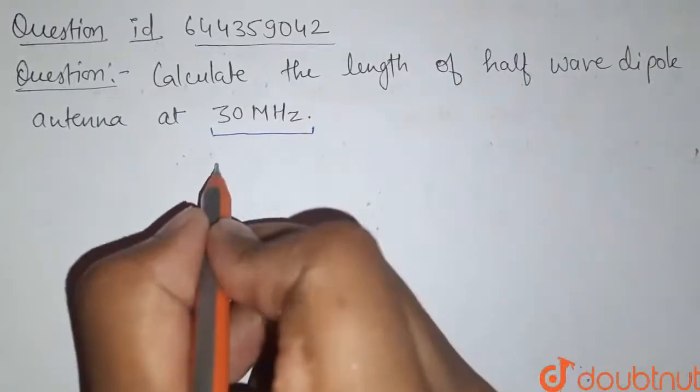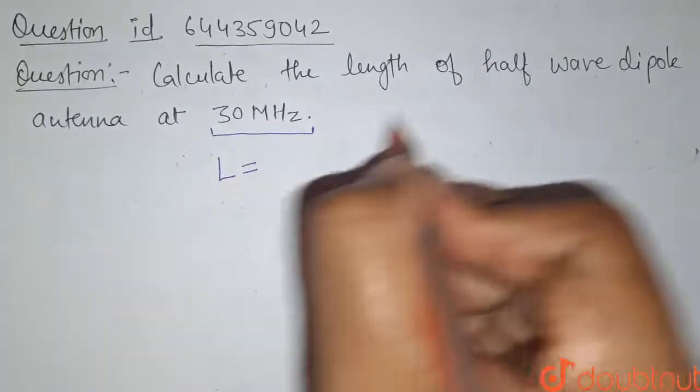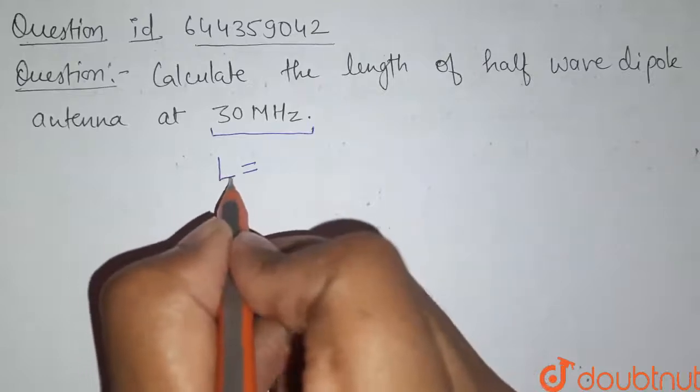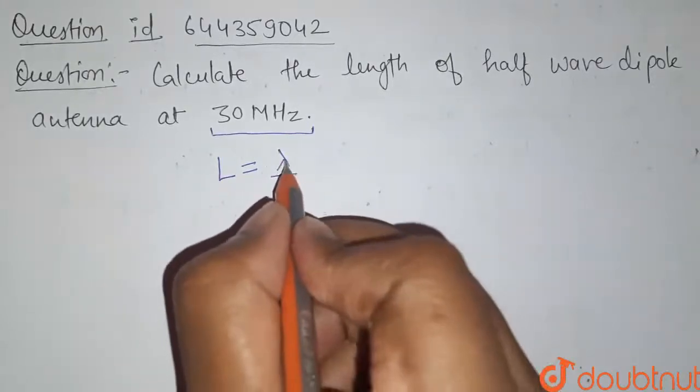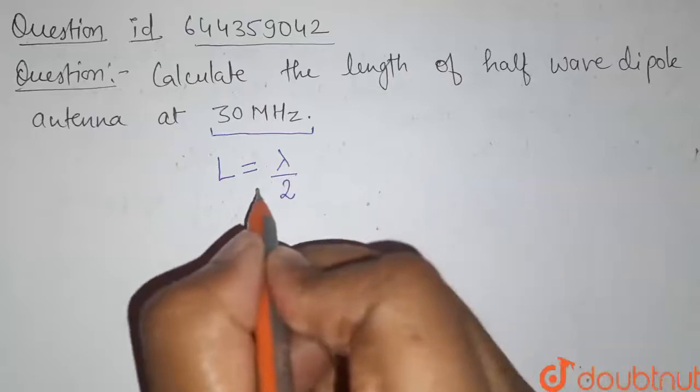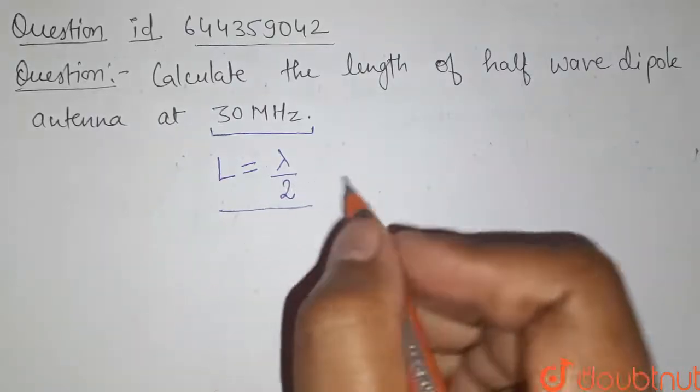Here we have to find the length of half wave dipole antenna. Length is given by lambda by 2, where lambda is the wavelength. This is the length for half wave dipole antenna.